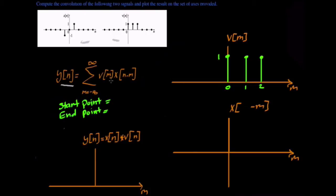For the start point, we take the most left one in both functions and add them together. For the end point, we choose the most right one and add them together. So the start point is going to be negative one and the end point is going to be three.